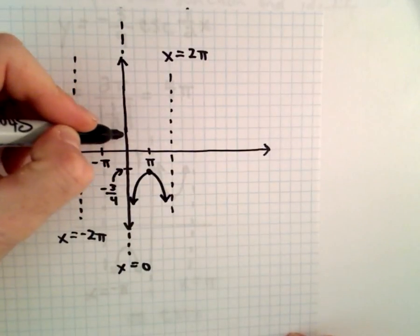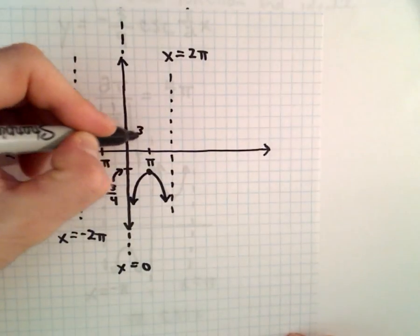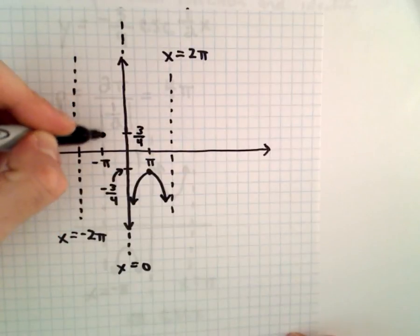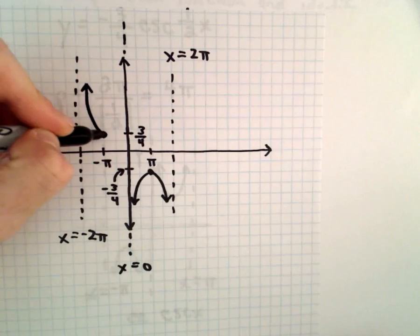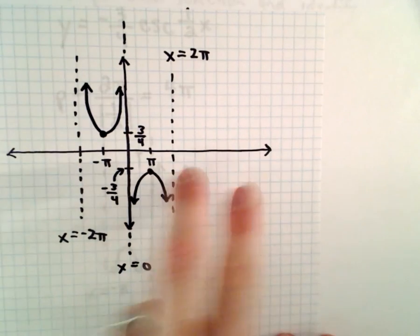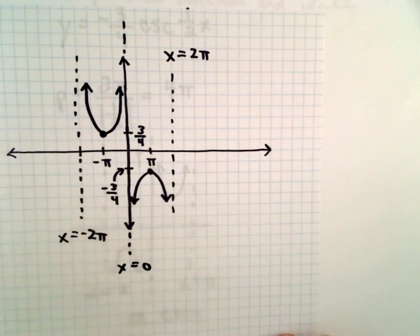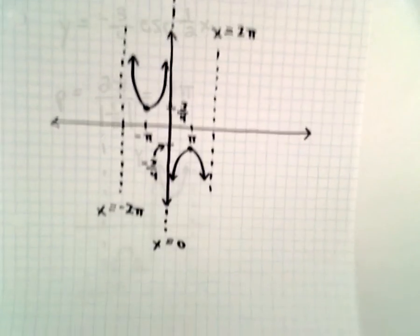Likewise, at negative pi, the y-value will be positive three-fourths, and then it will increase. And then it just keeps repeating. So that's one period of the graph.